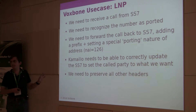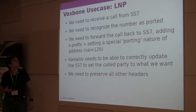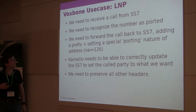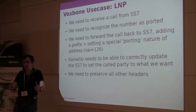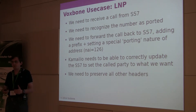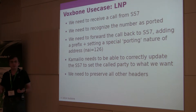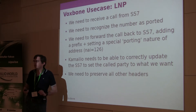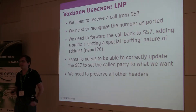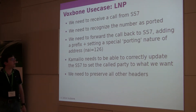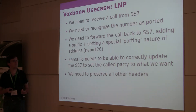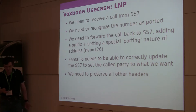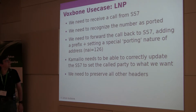Lastly, and this is the case that Voxbone is using in production, is implementing local number portability. In the UK, there is no central portability database. If a number has been ported out, you get the call in, see the number is ported, forward it, and you have to send the nature of address indicator with a special code of 126 to say it's ported, and add a prefix in front of the telephone number. If you do not preserve all the special headers — BT wants user-to-user and several other UK-specific headers preserved — BT will not like you.